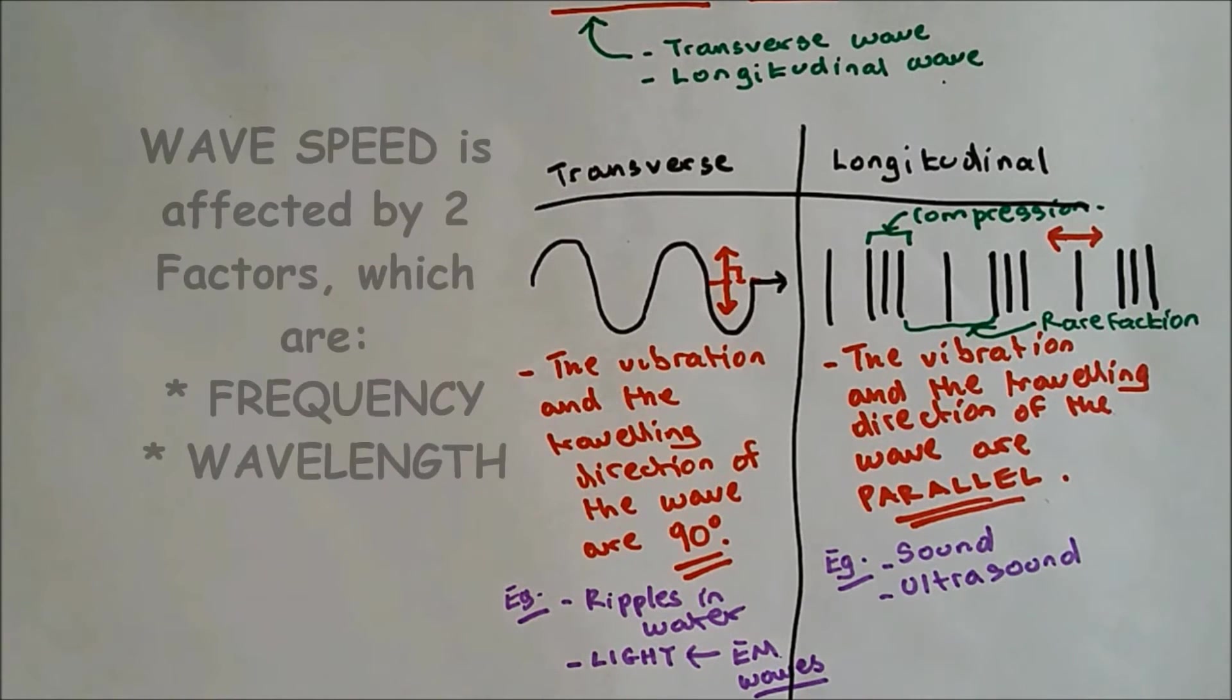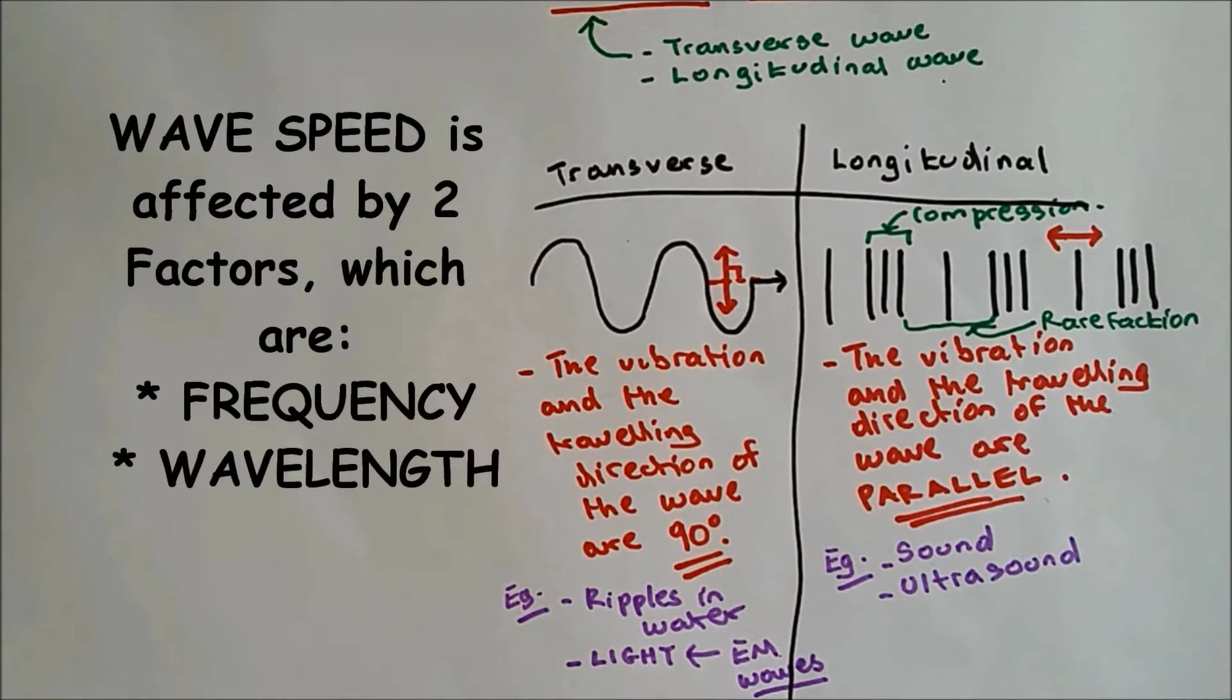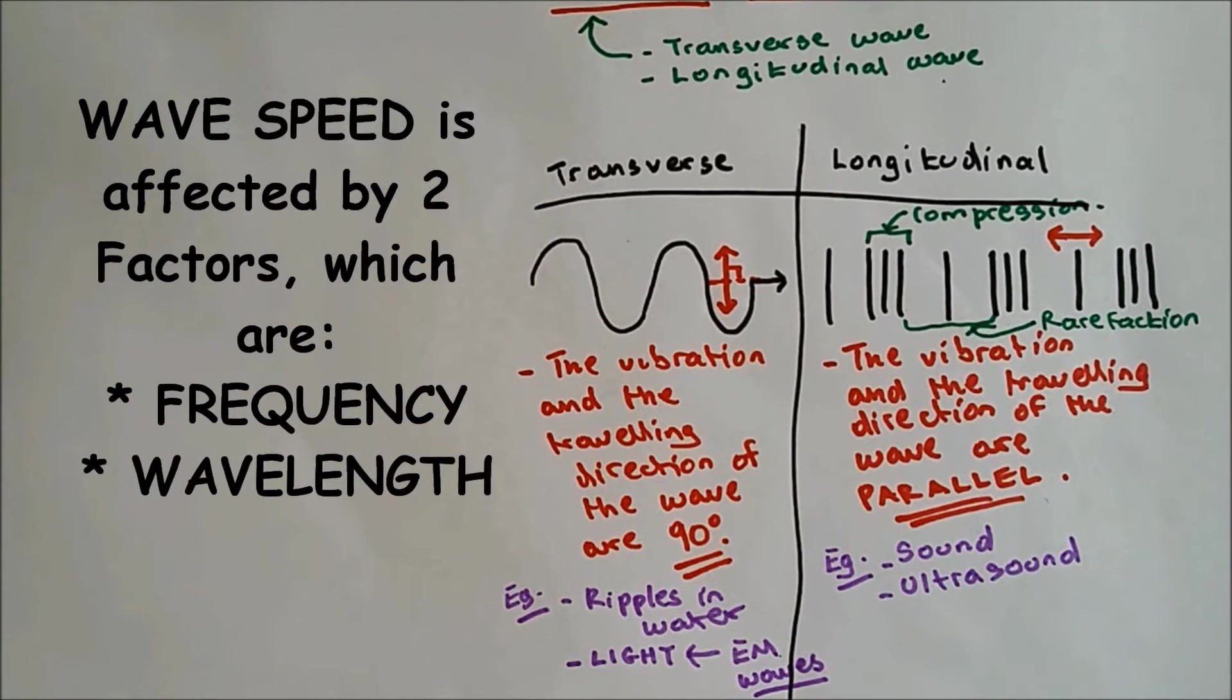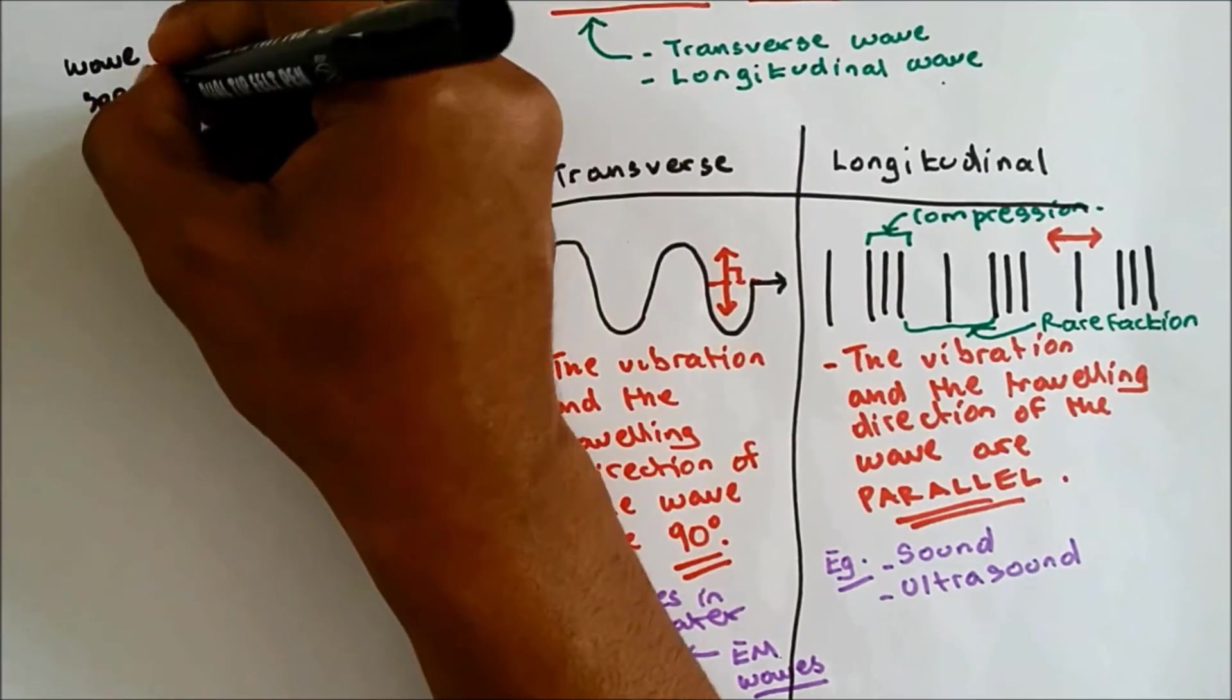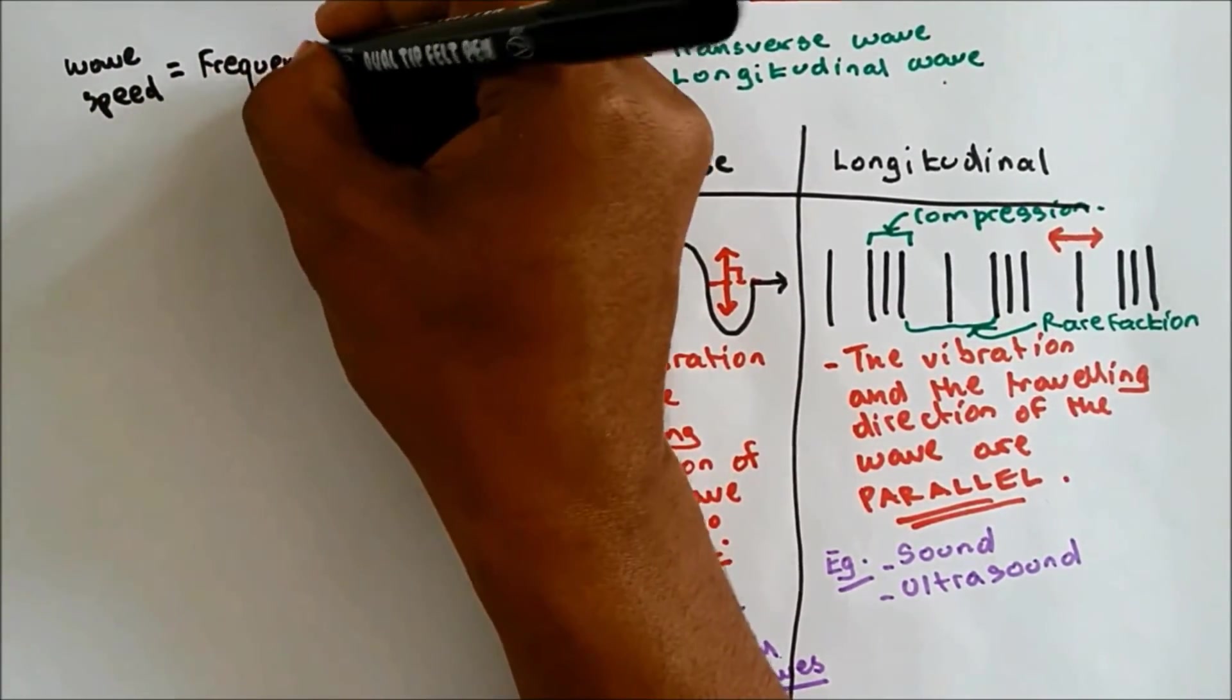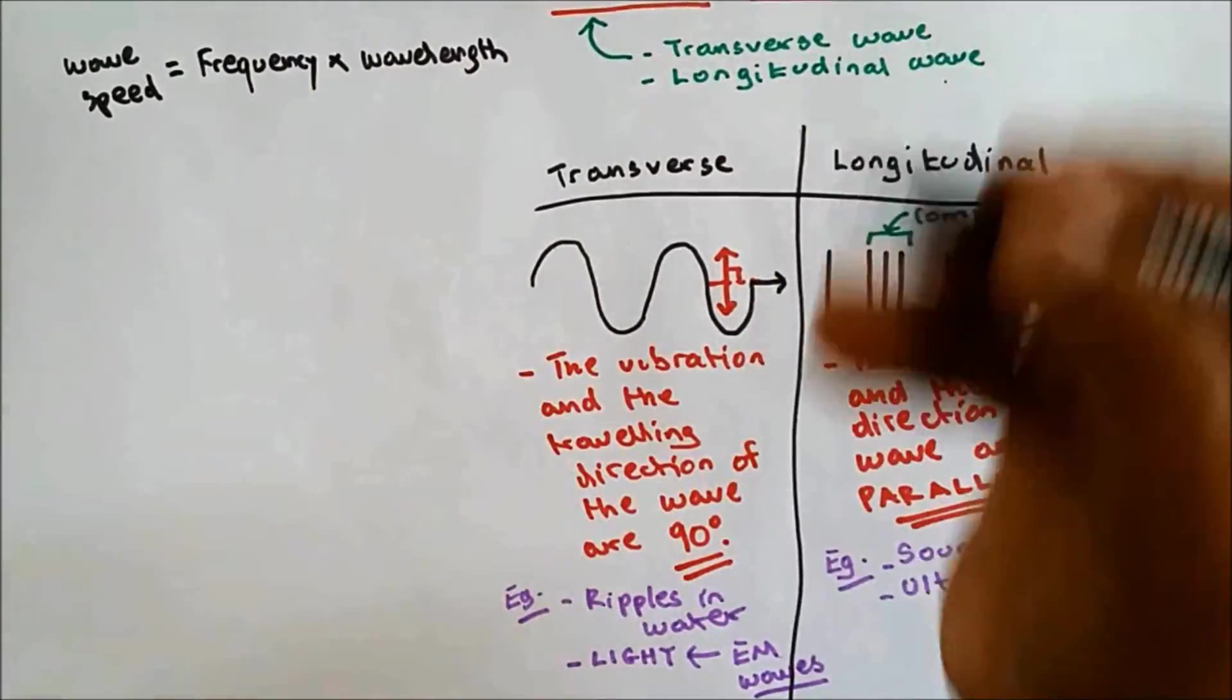Okay, now let's take a look at the speed of the wave. Now wave speed is affected by two factors. One is the frequency of the wave. And the other one is the wavelength of the wave. And the formula for wave speed is wave speed is equal to frequency times wavelength.